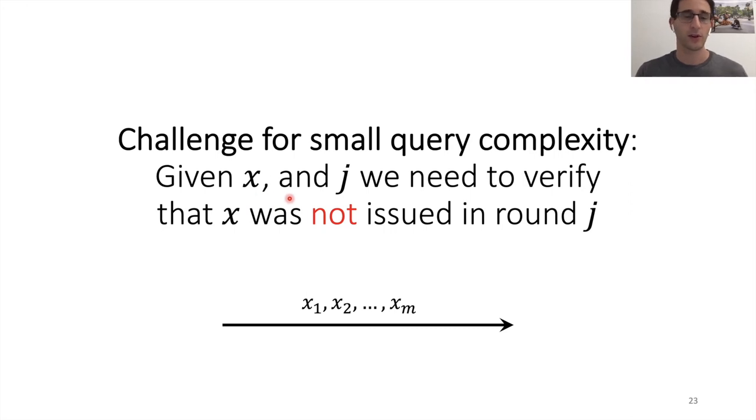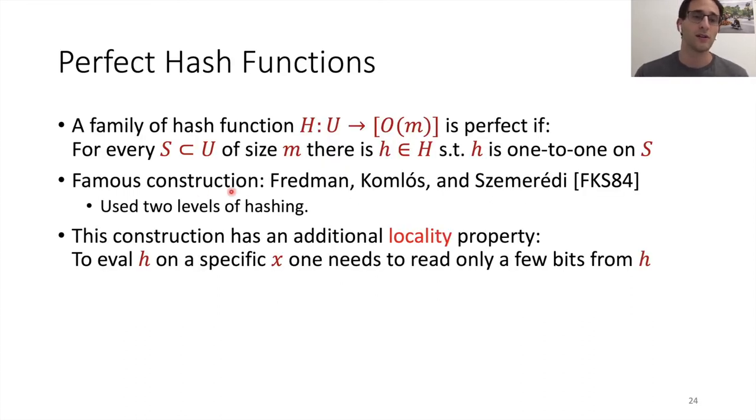So this is our main challenge now. The main challenge to get small query complexity is the following. You're given X and we're given some round J, doesn't matter. And we need to verify that X was not issued in round J. So think of this as round J. We want to verify that X is not here. Verifying that X is here, that's easy. The prover can just point us to the location of X and we can read it. So we can just locally read it and we don't have to read the entire message. But we want to make sure that X is not here. And for that we're gonna have to ask the prover for some additional help. But that's fine because this is an IOP and I can use the power of IOP.